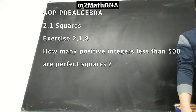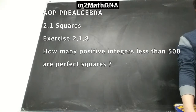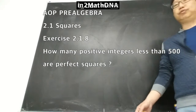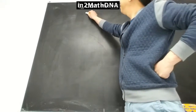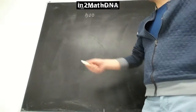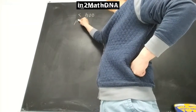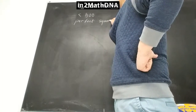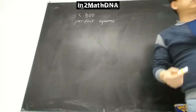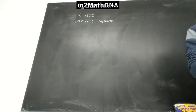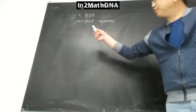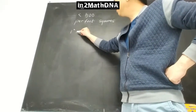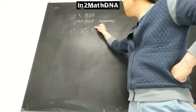Find any positive integers less than 500 that are a perfect square. First, you have to start with some number scale. The first number is one squared, then two squared, three squared — you can keep going like that.